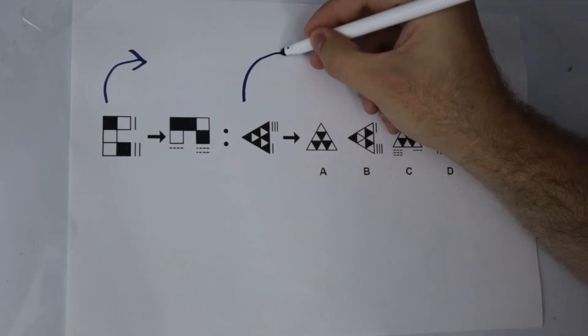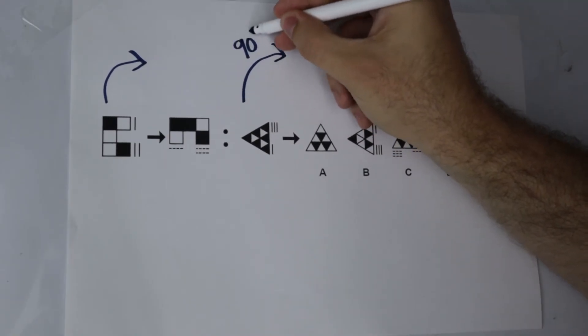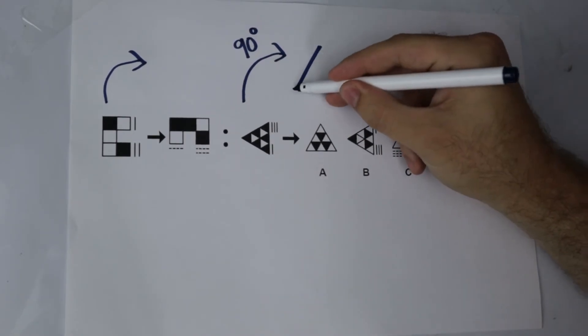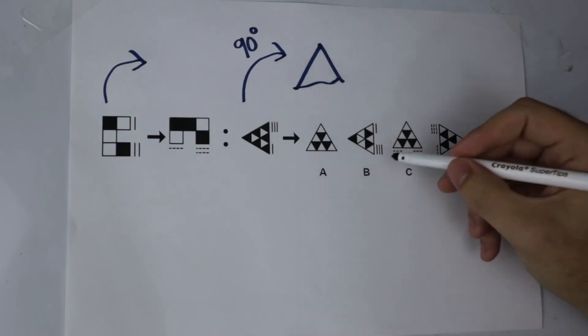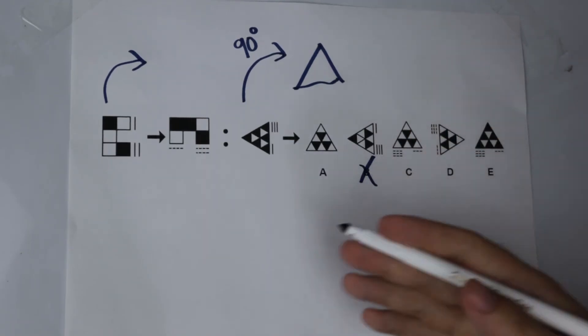So I am going to do the same to my shape that I have been given. I have got a triangle pointing that way. It is going to rotate 90 degrees clockwise so I know it has got to look like this. Therefore I know that I can get rid of some answers now which cannot be true. It cannot be B. It is not following the same transformation.